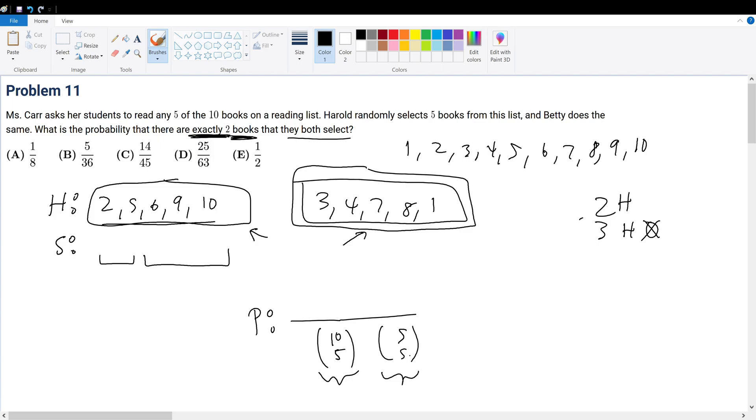Which is 5 pick 5. 5 pick 5 just means 1, meaning that there's only one combination possible, which in this case is 3, 4, 7, 8, 1, as illustrated right here. Now, we have the denominator set, let's find the numerator.